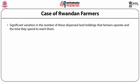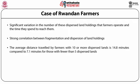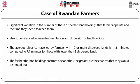There is significant variation in the number of dispersed land holdings that farmers operate and the time they spend to reach them. In Rwanda, for instance, there is strong correlation between fragmentation and dispersion: the average distance travelled by farmers with 10 or more dispersed lands is 14.8 minutes compared to 7.1 minutes for those with fewer than 5 dispersed lands. The farther the land holdings are from one another, the greater the chances they would be rented out, breaking the ownership-usage relationship.